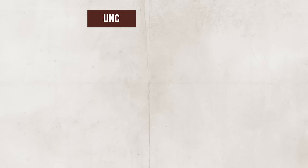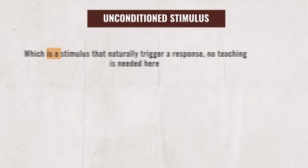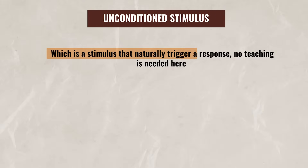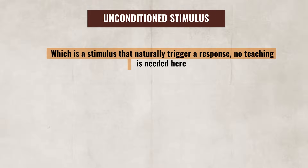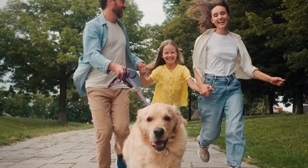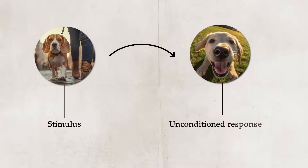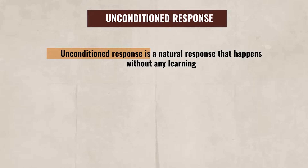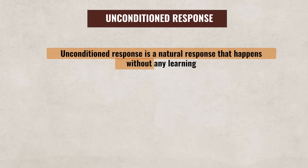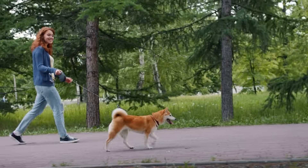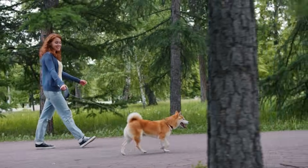The next type is an unconditioned stimulus, which is a stimulus that naturally triggers a response. There's no teaching needed here. For example, going for a walk with your dog will naturally excite your dog. The walk is the stimulus and it leads to an unconditioned response, which is excitement. An unconditioned response is a natural response that happens without any learning — in this case, the dog is getting excited by the walk.